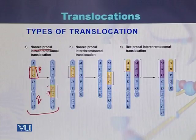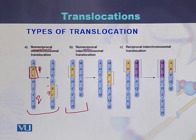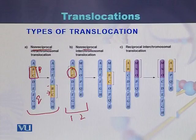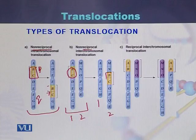In the case of non-reciprocal inter-chromosomal translocation, this type of translocation occurs between two chromosomes — chromosome 1 and chromosome 2. A fragment from one chromosome is deleted and joins onto the second chromosome. Fragments B and C are deleted from chromosome 1 and join with chromosome 2.